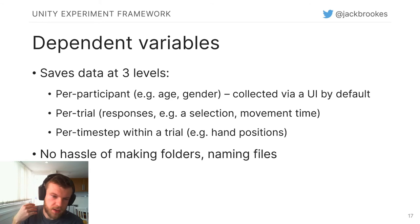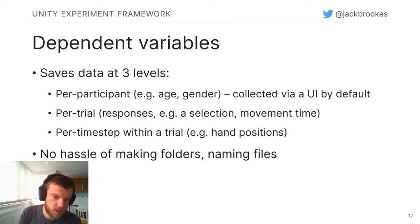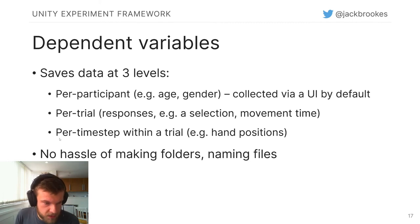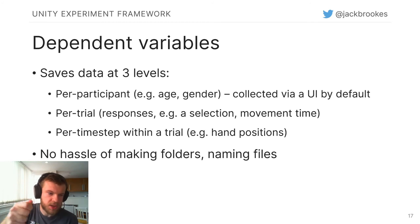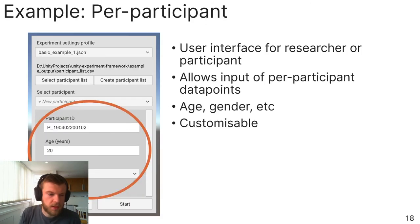For the dependent variables — the ones we can only measure — UXF has three different levels of data. First, per-participant data: a single data point per participant such as age or gender. Second, per-trial data: for example, recording which choice was made on each decision trial. Third, per-timestep data: for example, the reaching motion — recording the position of the hand at each time point to reconstruct movement trajectories. UXF handles all of this automatically without the user having to create folders or worry about naming files.